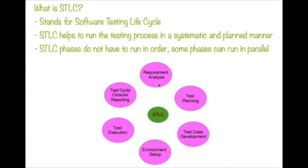The next phase is test cycle closure and reporting. In this phase, all reported bugs should be fixed and there should be some metrics — for example, how do we know when to stop testing or when to deploy to production? The general rule is that 95% of the code should be bug-free with no major, serious bugs, or blockers. Minor bugs are okay given known risks, and that must be approved by the team or management. Then QA provides sign-off — and that's STLC in a nutshell.